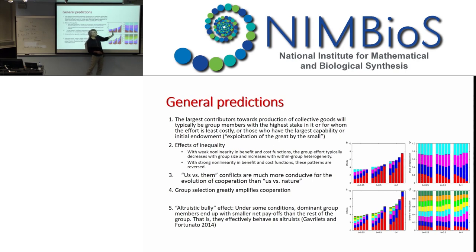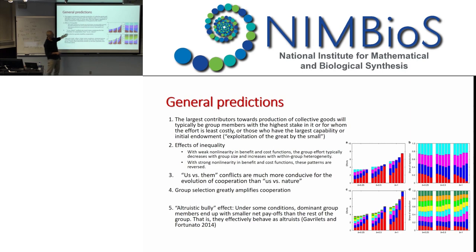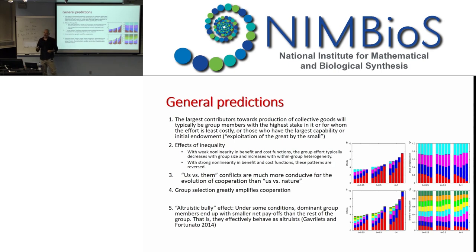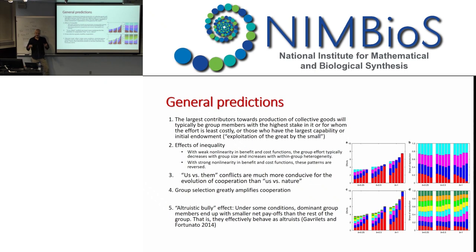Inequality increases as you go from left to right, and the total bar grows with inequality. So the conclusion is that in unequal groups we are more efficient in between-group conflict. But I want to emphasize that it depends on parameters — on the way costs are structured. Under some other conditions, egalitarian groups will do better than hierarchical groups. A rather general result is that 'us versus them' games are much more conducive than 'us versus nature' games — cooperation is easiest to evolve if there is some kind of conflict between groups, some warfare. Group extinction also simplifies that.